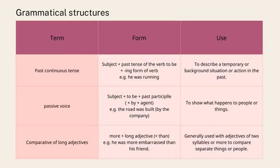The rules for grammatical structures use grammatical terms to describe forms and uses. Form refers to the specific grammatical parts that make up the structure and the order they occur in. Use refers to the meaning that the structure is used to express. Look at these examples.